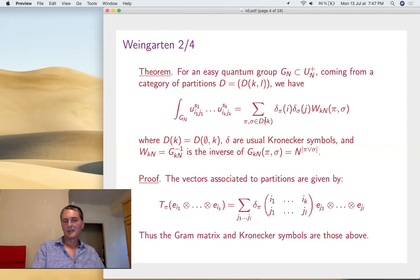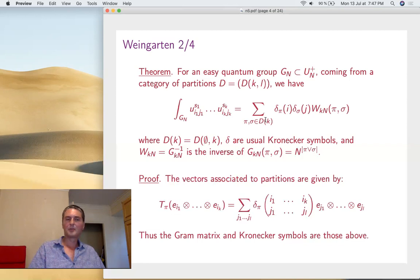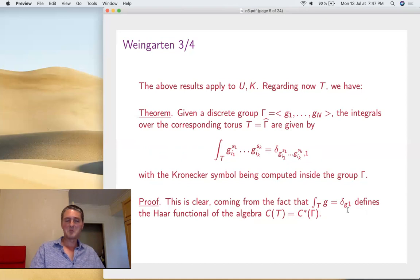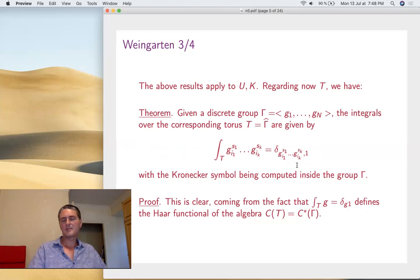Now we know in theory how to integrate over U_{N,K}. Before getting into computing explicit integrals, let's talk about the torus and the sphere too. For the torus, the integral element is very simple. On the group algebra, the integral of group elements is zero or one depending on whether g is the identity. So if you want to integrate polynomials, you just check if they are one or not. That's just the basic formula, enough for most applications. Of course T is the diagonal torus of an easy quantum group, so we can also use partitions, but for most applications it's trivial.